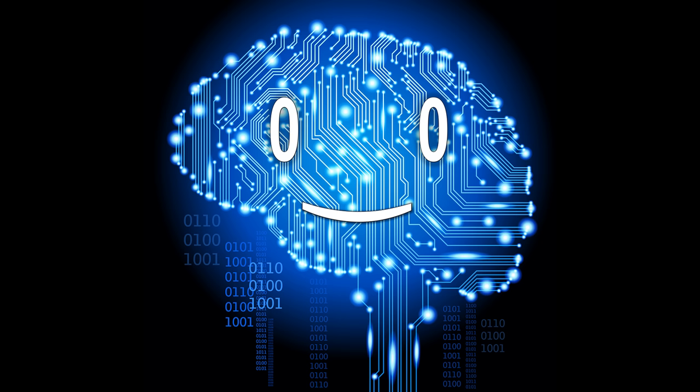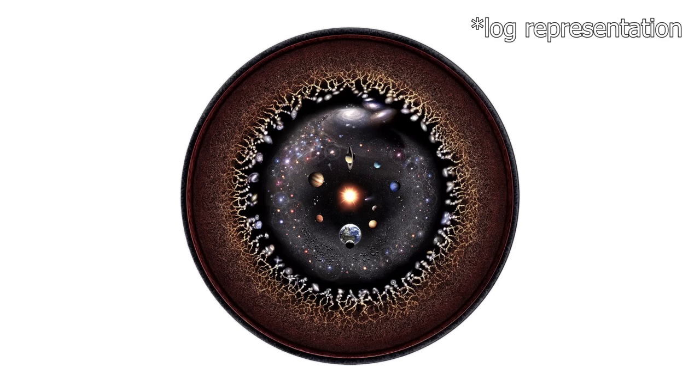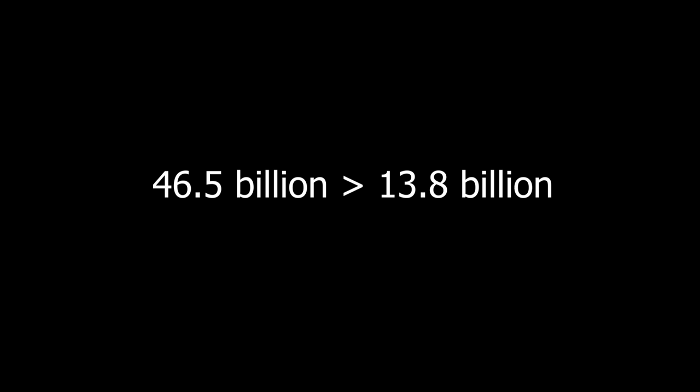This way, through some fancy calculations, scientists derived that the radius of the observable universe is 46.5 billion light years, or 93 billion light years in diameter. That's quite a bit more than its age.